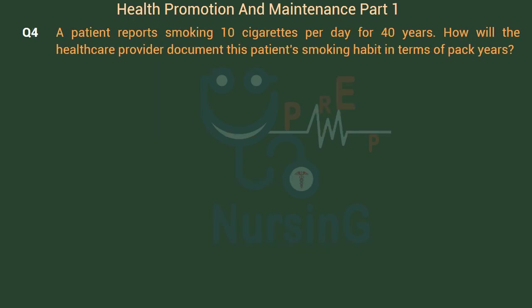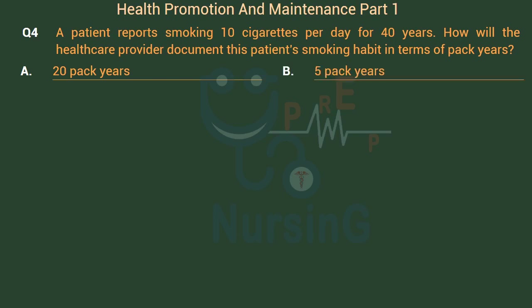A patient reports smoking 10 cigarettes per day for 40 years. How will the healthcare provider document this patient's smoking habit in terms of pack years? Option A: 20 pack years. Option B: 5 pack years. Option C: 10 pack years. Option D: 4 pack years.